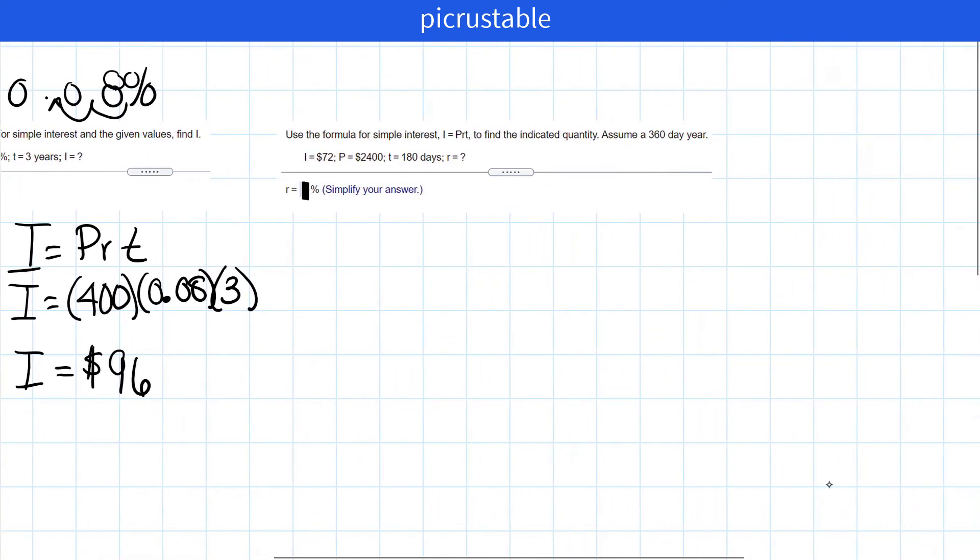Let's look at the last one we have. Use the formula for simple interest, I equals PRT, to find the indicated quantity. Assume a 360-day year. Let's write out our formula again.